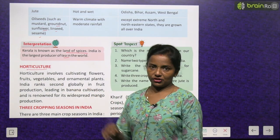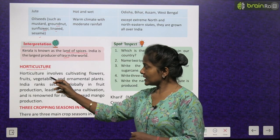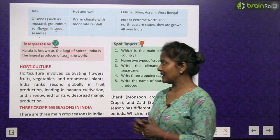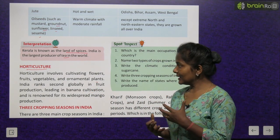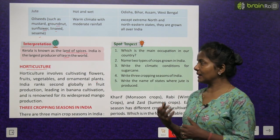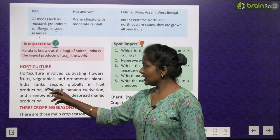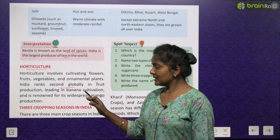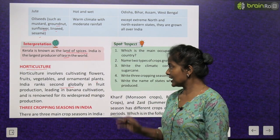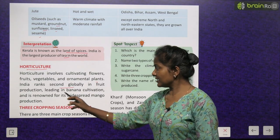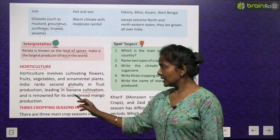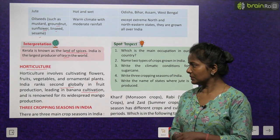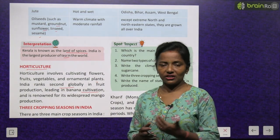Horticulture involves cultivating flowers, fruits, vegetables and ornamental plants. India ranks second globally in fruit production, leading in banana cultivation and is renowned for its widespread mango production.